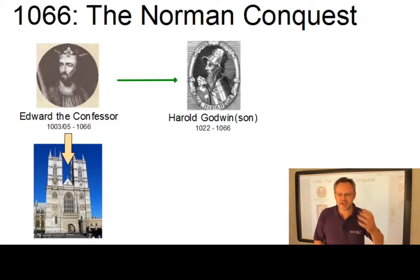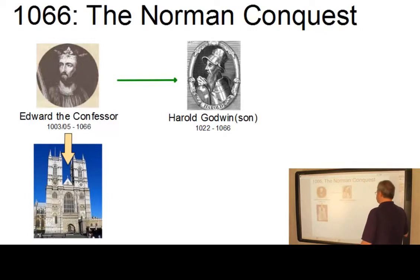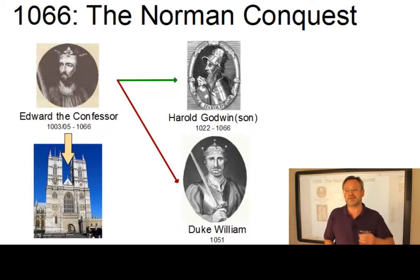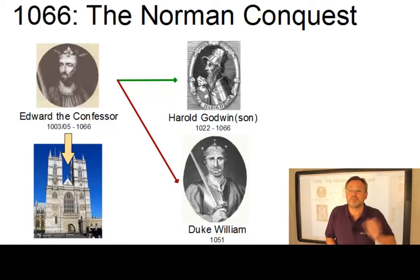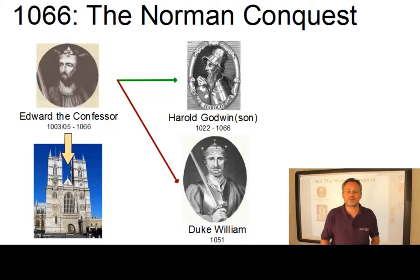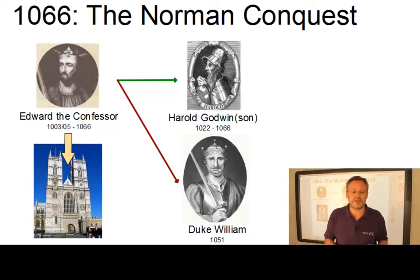The crown had scarcely been put on his head when King Harold's problems started. In Normandy, the Duke William did not agree with the voting of the council. William claimed that years earlier, namely in 1051, Edward had already promised the crown of England to him. In addition, he believed he had strengthened his claim still further when, in 1063, he had tricked Harold into swearing to support his claim to the English throne. More than a little annoyed, William prepared to invade England.